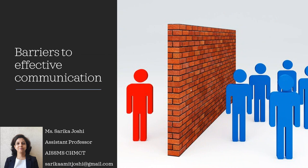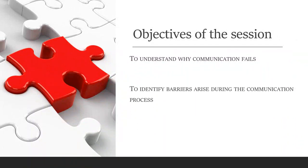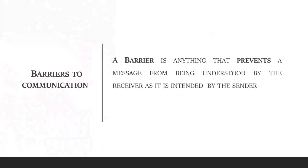In my previous videos, we have seen the process and the types of communication. The objectives for today's session are to understand why communication fails and to identify the different barriers which arise during the process of communication. Let's first understand what you mean by a barrier to communication. A barrier is anything that prevents a message from being understood by the receiver as it is intended by the sender.